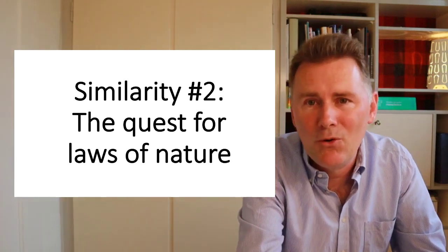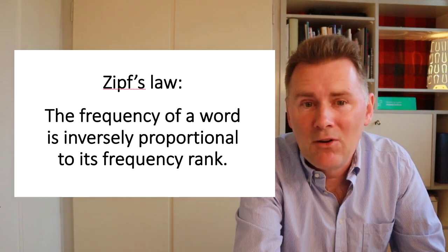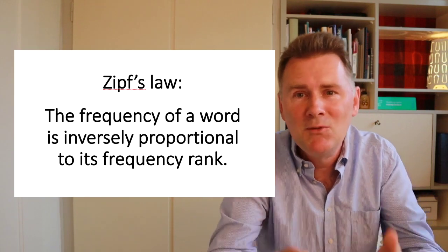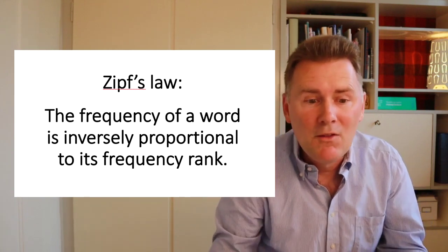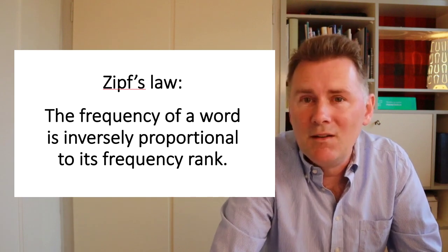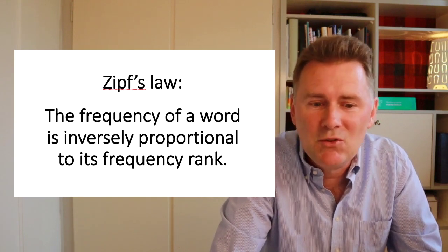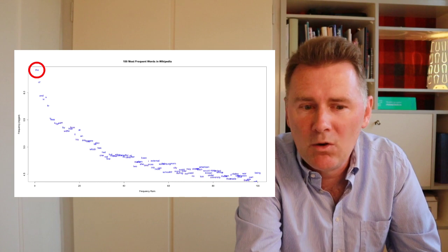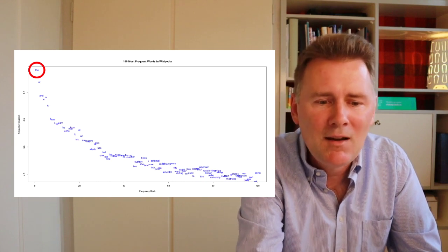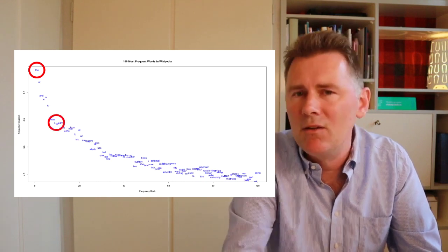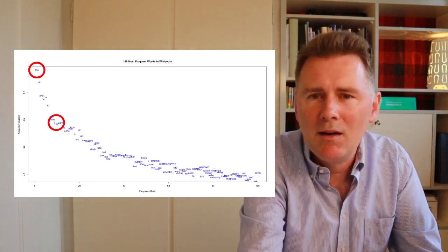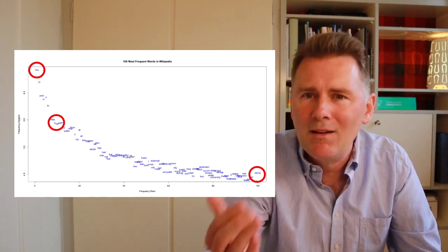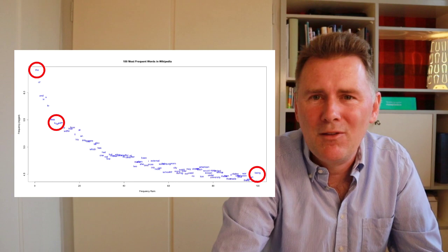One example is what's known as Zipf's Law. Zipf's Law states that in any body of text, in any book, in any newspaper article, the frequency of a word is inversely proportional to its frequency rank. That means in a nutshell that the most frequent word in a corpus is ten times more frequent than the tenth most frequent word, and it is a hundred times more frequent than the hundredth most frequent word, and so on and so forth. That's Zipf's Law.